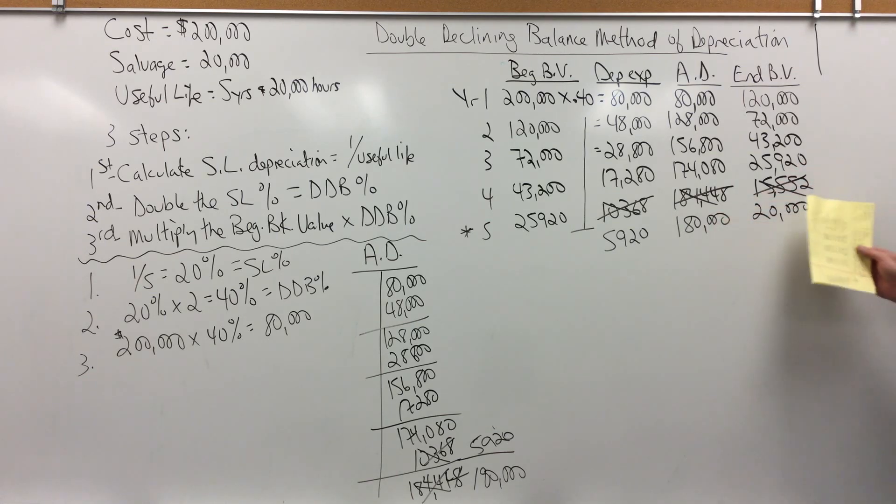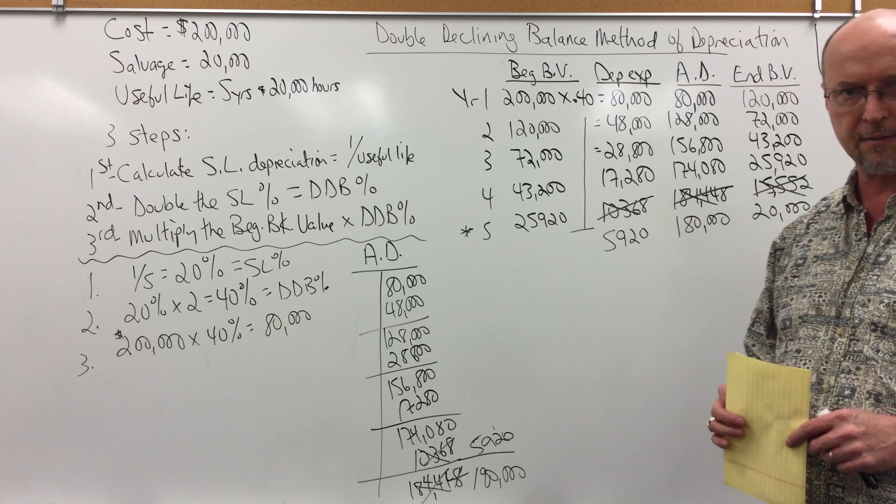Okay, and so either way, we can calculate the final year depreciation. And that is the double declining balance method of depreciation.